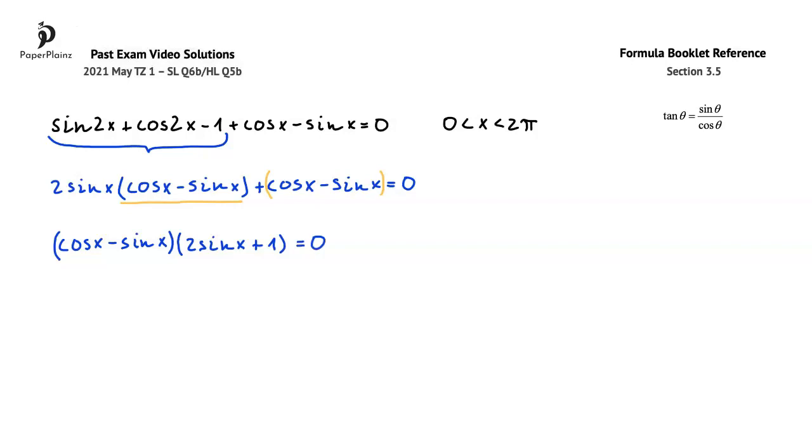The product of the two expressions in parentheses is 0. So, using the null factor law, we can write that cos x - sin x = 0 or 2sin x + 1 = 0.